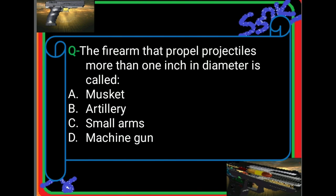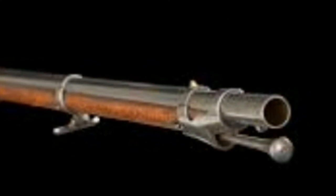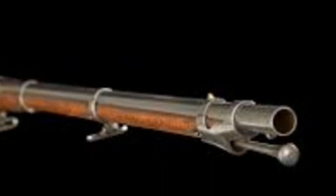The musket is a smoothbore, muzzle-loading firearm — meaning the inside of the barrel is smooth, and it is loaded from the muzzle end. It is one of the oldest types of firearms: you first load gunpowder, then a lead ball, then a fuse, and then you light the fuse to fire it. The barrel is used only to direct the bullet.